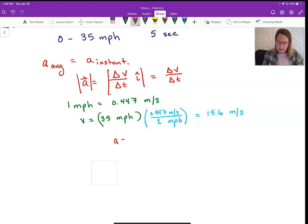And then I'm basically done with this estimate. I then say that acceleration is the change in velocity. Change in velocity goes from 0 to 35. So it would be 15.6 meters per second final minus the initial, all over the time, 5 seconds.